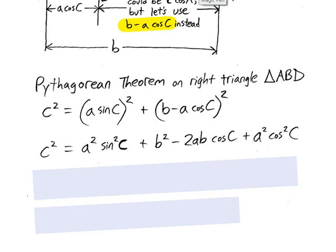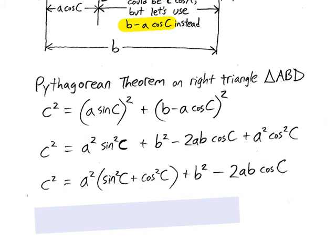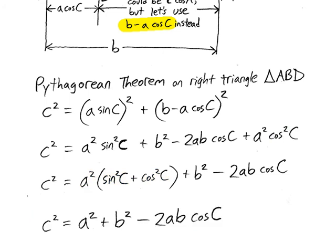And look at which trig identity is coming up. You see a sine squared and a cosine squared. And it has the same coefficients. It's being multiplied by A squared in both cases. So you can definitely factor out the A squared and have a sine squared plus cosine squared of angle big C on the inside. And we know that that inside just simplifies to one. So we end up with this equation.